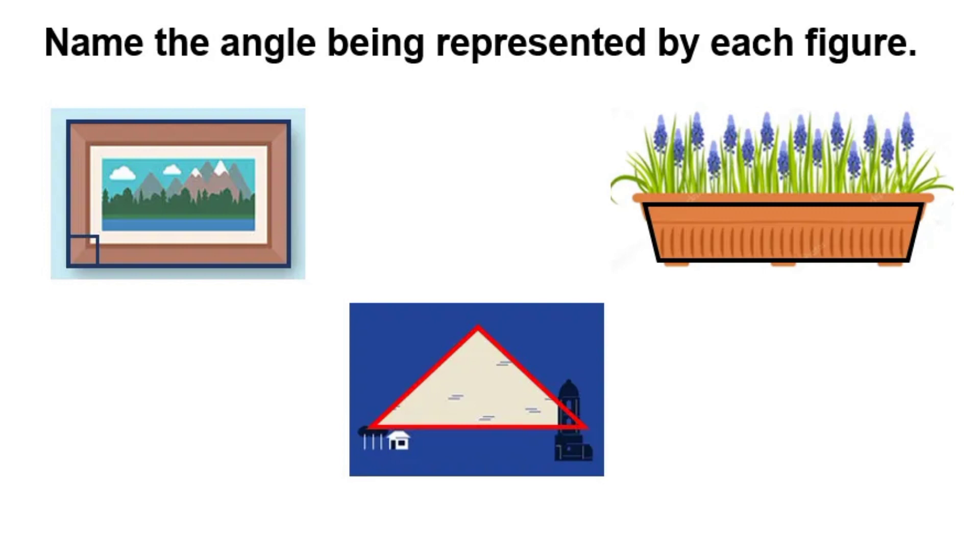After we have described the different types of angles, we can now name the angle being represented by each figure. The first figure shows a right angle.